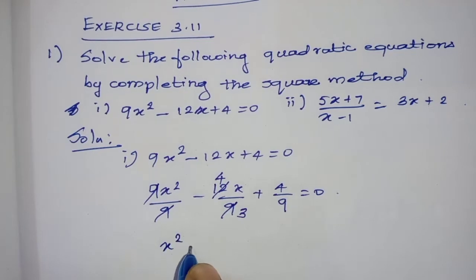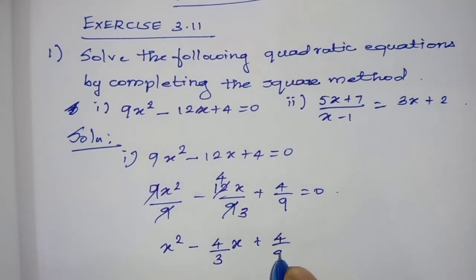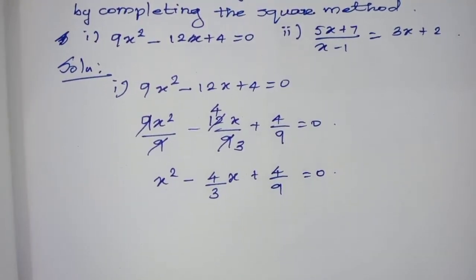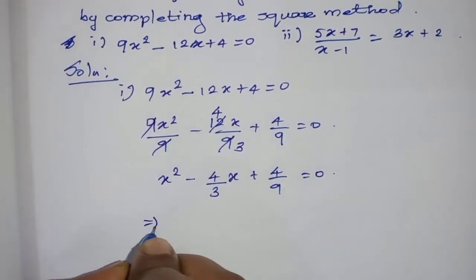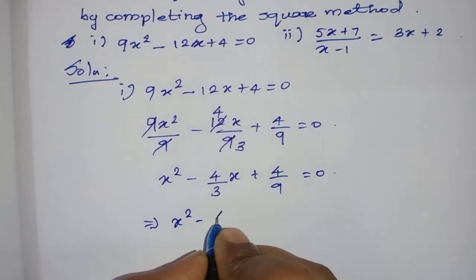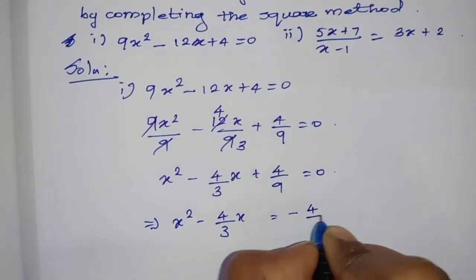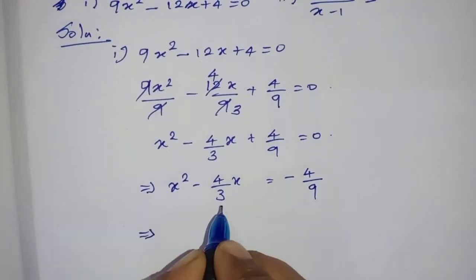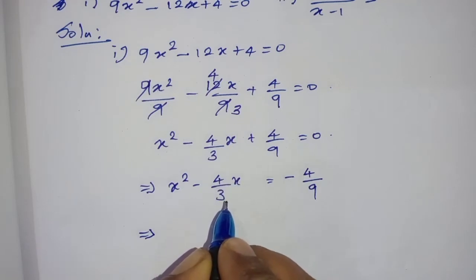So we have x² minus 4/3 x plus 4/9 equal to zero. Next step: shifting the constant to the right hand side. So x² minus 4/3 x is equal to minus 4/9. Next step: add the square of half of the coefficient of x to both sides.